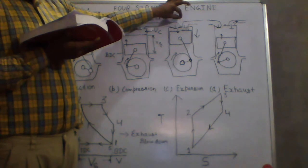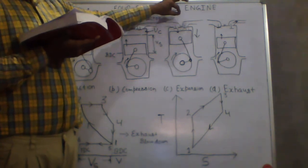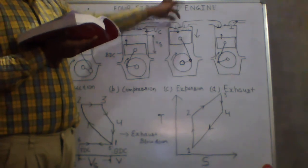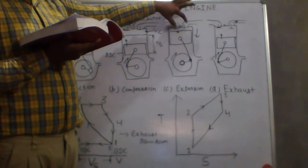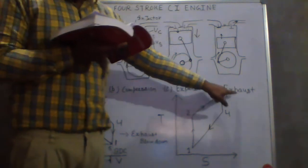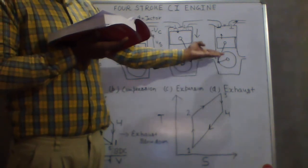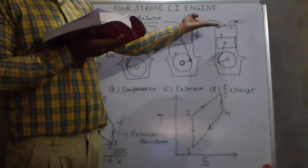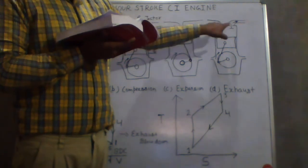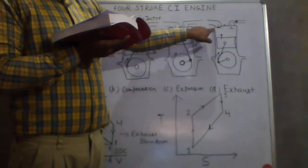After injection of fuel is completed, the products of combustion expand with both valves remaining closed. The piston then moves downward. In the exhaust stroke, the piston travels from bottom dead center to top dead center, pushing out the products of combustion. The exhaust valve is open and the intake valve is closed during this stroke.